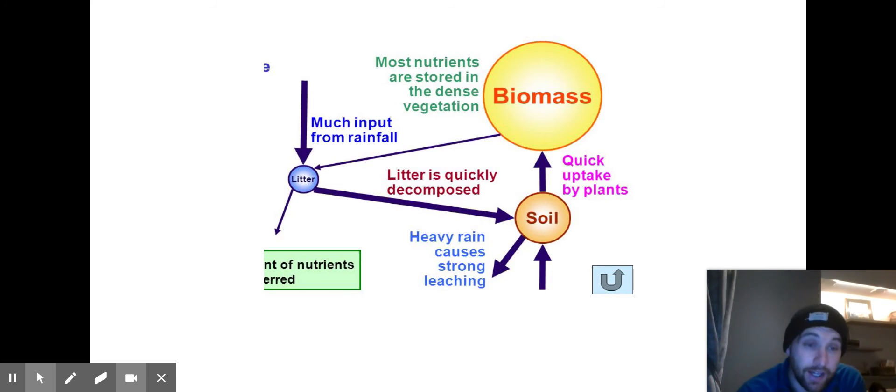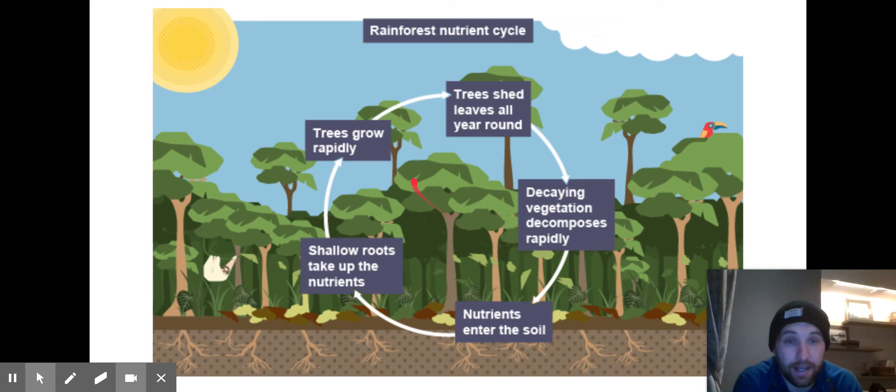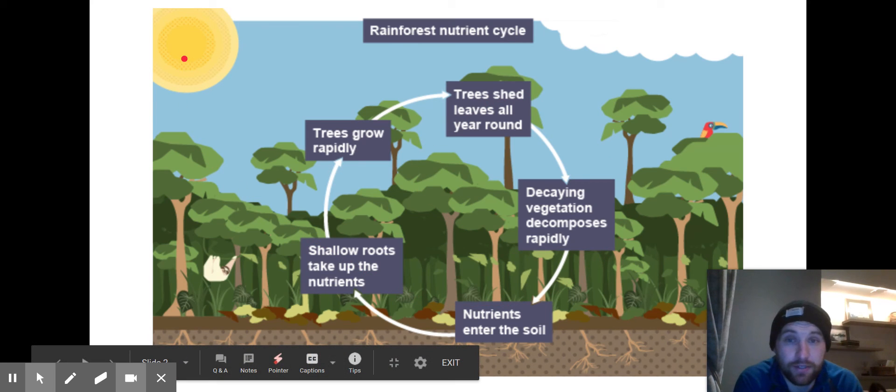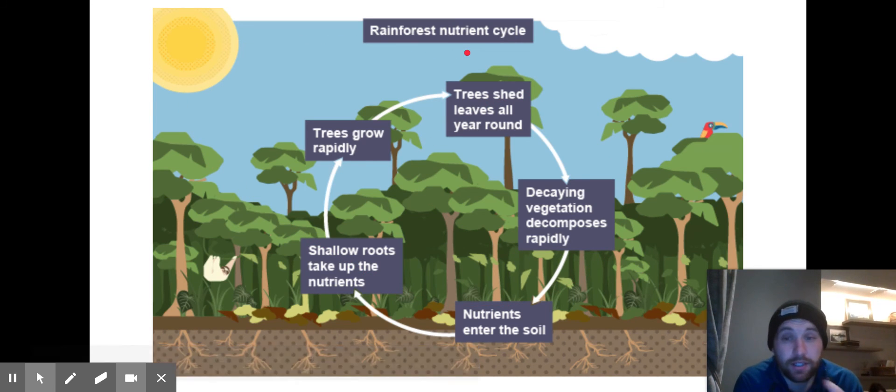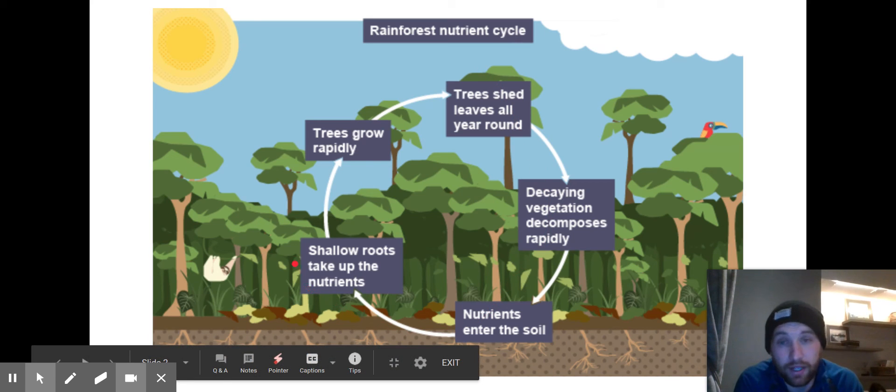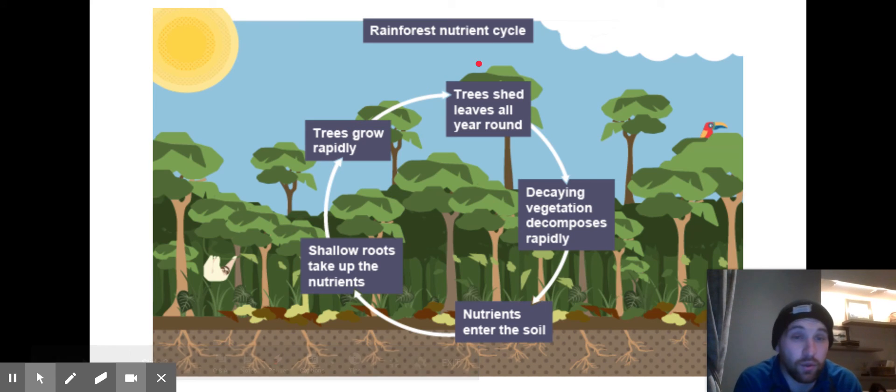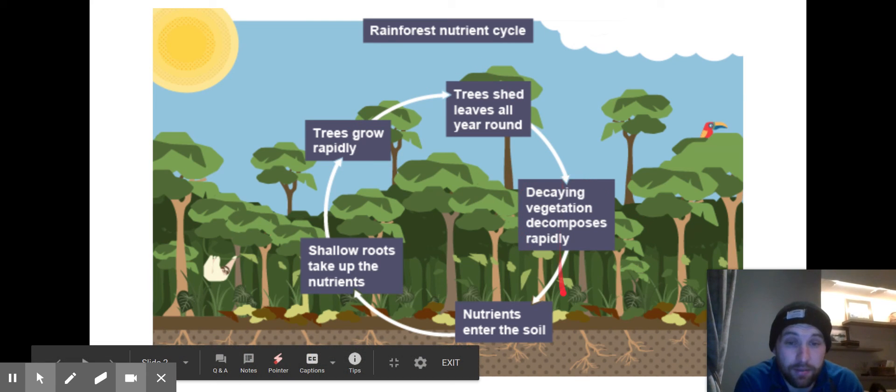And that's one of the reasons why those big emergent trees have things like the buttress roots, those big shallow roots, because all of the nutrients are stored in that top layer of soil and in that litter, so it means they're more likely to be able to absorb them. And we can see why that's so quick because of these inputs from the sun and the rain which just kind of speed up this process, kind of supercharge the process. So trees are growing quickly, they're losing their leaves all year round, they're decaying, decomposing, being broken down, and then moving from the soil back into the trees to continue the cycle.